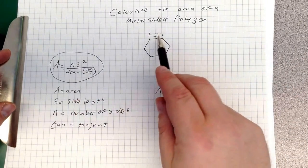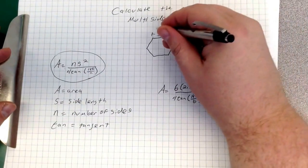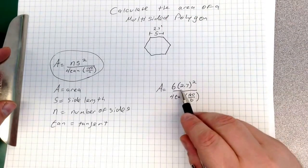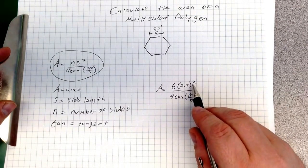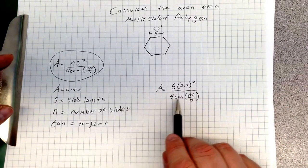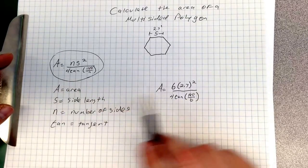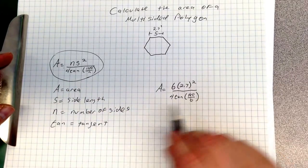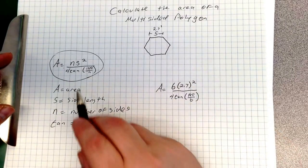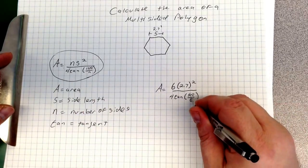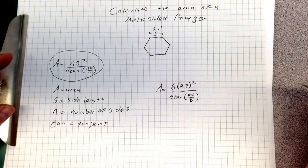S is your length of the sides, and that, for me, is going to be 2.7 inches. So 6 times 2.7 inches squared. Down below, I have 4 tan, which is a constant, times 180 over n, which is 6, because n is your number of sides. So this is how this equation is set up, just like so.